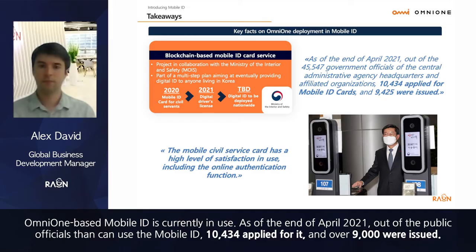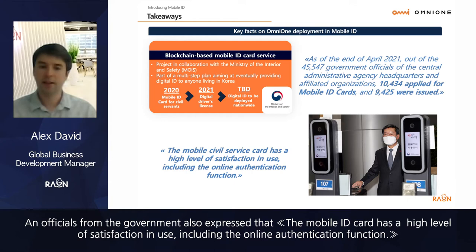OmniOne mobile ID is currently in use. At the end of April 2021, out of the public officials eligible to use the mobile ID, 10,434 applied for it and over 9,000 were issued. An official from the government also expressed that the mobile ID card has a high level of satisfaction in use, including the online authentication function.